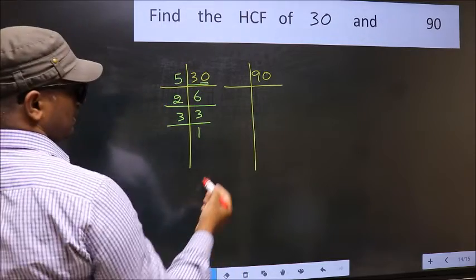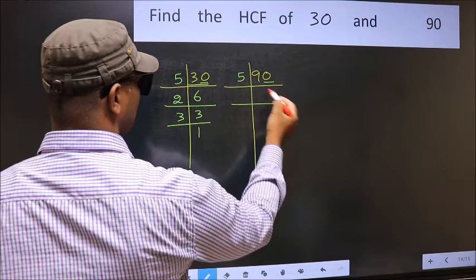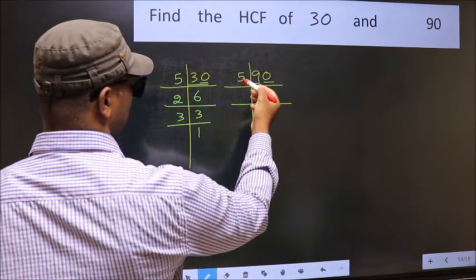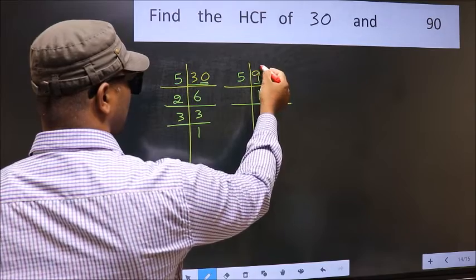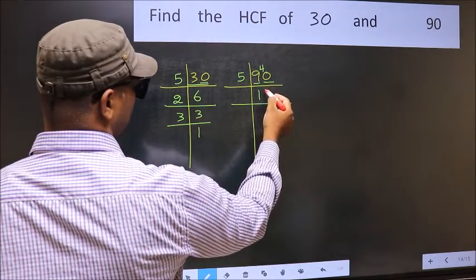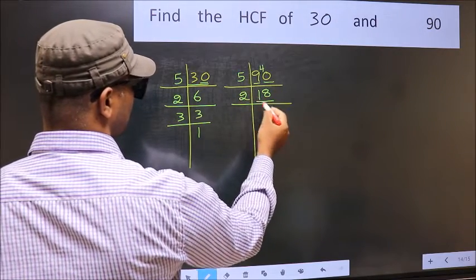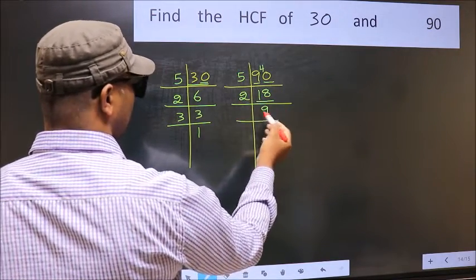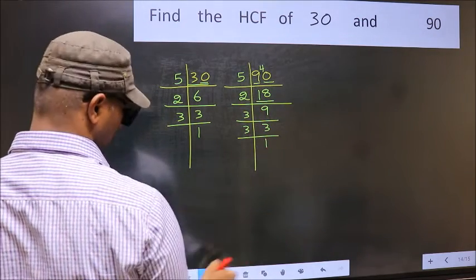Now the other number. Last digit 0, so take 5. First number 9. A number close to 9 in the 5 table is 5 times 1 equals 5. 9 minus 5 is 4, 4 carried forward makes 40. When do we get 40 in the 5 table? 5 times 8 is 40. Now 18 is 2 times 9. 9 is 3 times 3. 3 is a prime number, so 3 times 1 is 3.